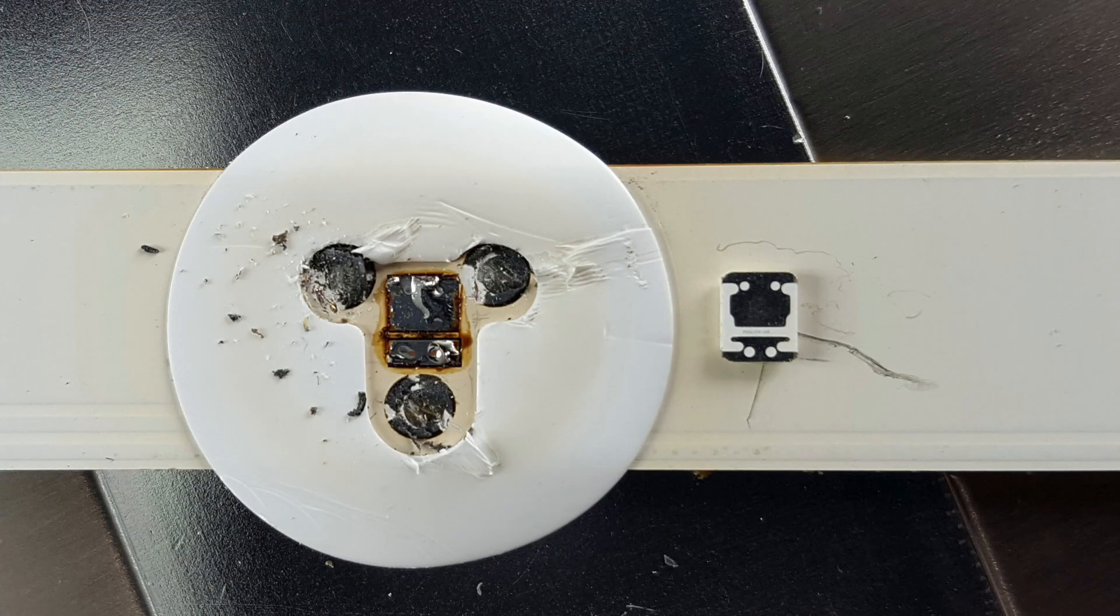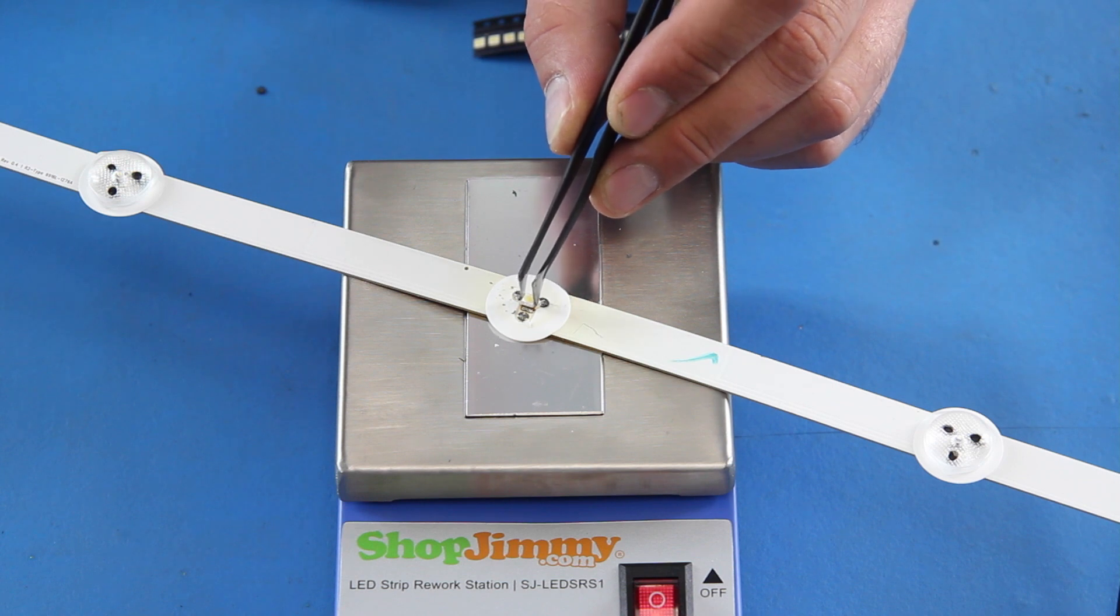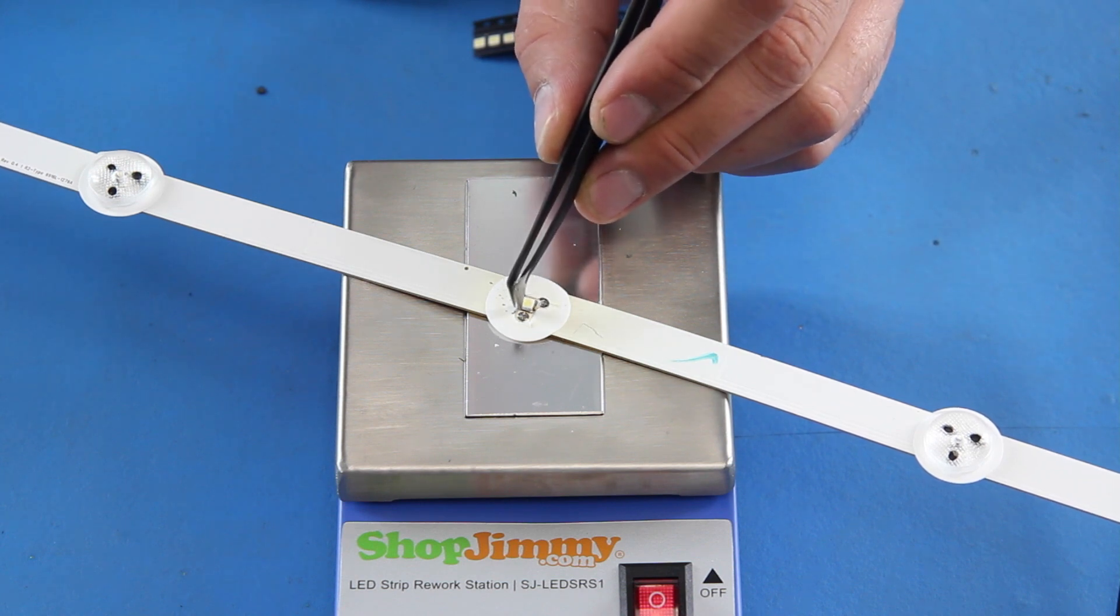Take the replacement LED and line it up properly on the strip. Our image shows the bottom of the LED and how it should line up on the strip. Get the LED into position and then use the tweezers to get it into its final position.